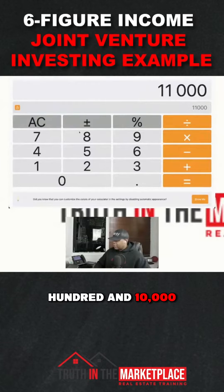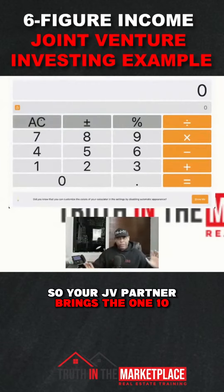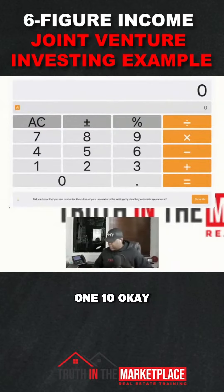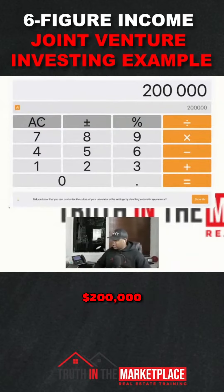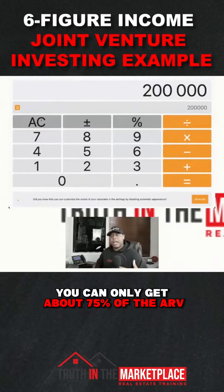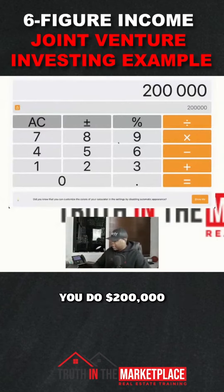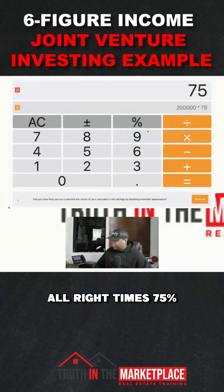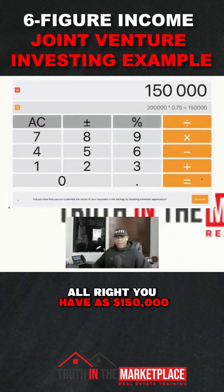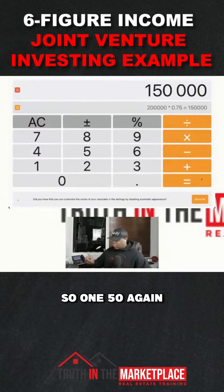So you're all in at $110,000 — you bought it for $100k and put $10k into it. Your JV partner brings the $110,000. Now, post-renovation, you can typically only get about 75% of the ARV. So $200,000 times 75% gives you $150,000. Remember, you're all in at $110,000.